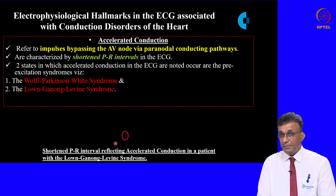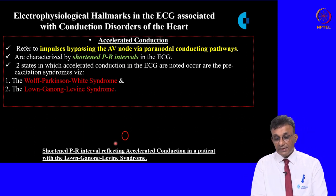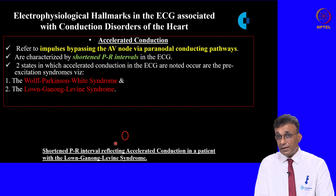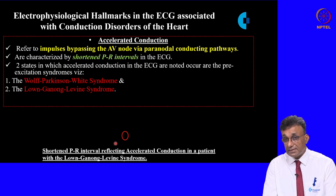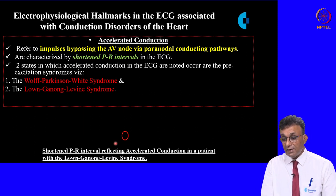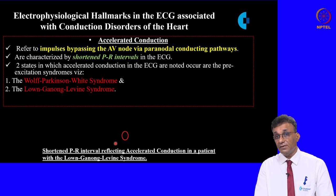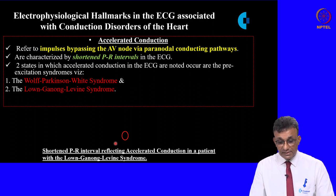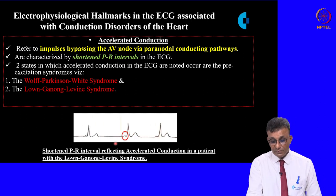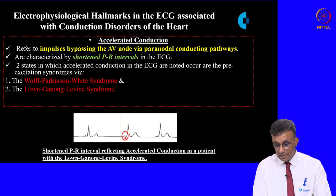Accelerated conduction is usually seen when a paranodal tract allows an impulse to bypass the AV node. The classical finding is a shortened PR interval, seen in two important syndromes: Wolff-Parkinson-White syndrome and Lown-Ganong-Levine syndrome. This tracing from a patient with Lown-Ganong-Levine syndrome shows the PR interval being shortened because of accelerated conduction.